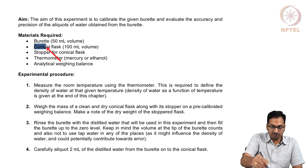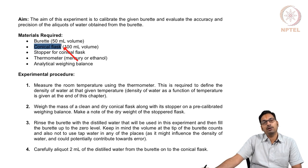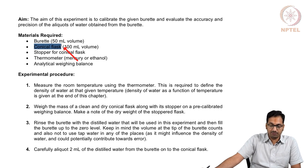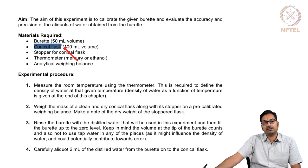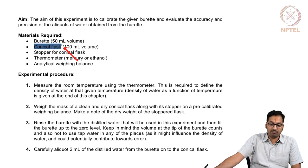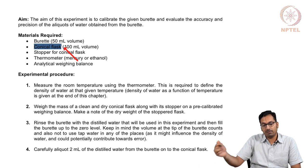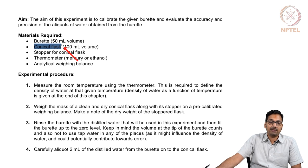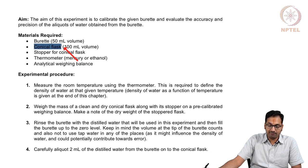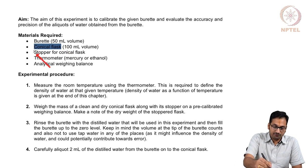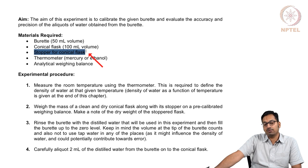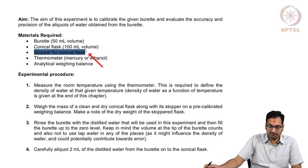We also need a conical flask to collect the liquid aliquoted out of the burette. A conical flask is better than a beaker because even if water splashes it does not leave the conical flask. With a beaker, a droplet going out results in systematic error. So for most titrations we use conical flasks for this reason. We should also stopper the conical flask so that no contamination comes up in such measurements.